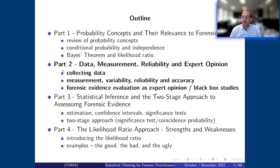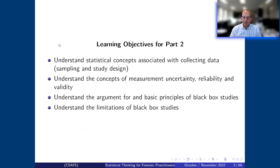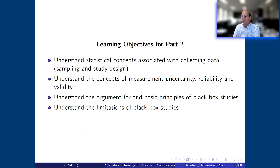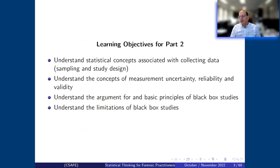So with all that as precursor, let's jump into today's material. The learning objectives for today are to understand how statisticians think about data collection — including sampling and study design. The second objective is focused on measurement, where we'll spend time talking about uncertainty, variability, reliability, and validity. Some of these words are key to how we think about forensic studies. Then we'll talk about black box studies for most of the second half, understanding what they're about and their limitations.